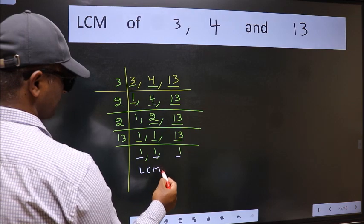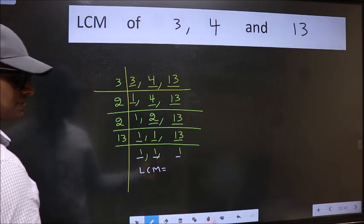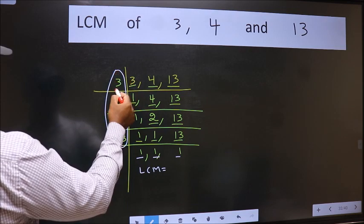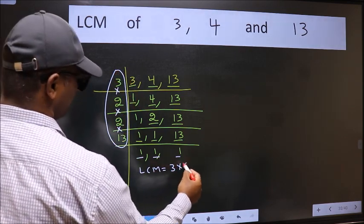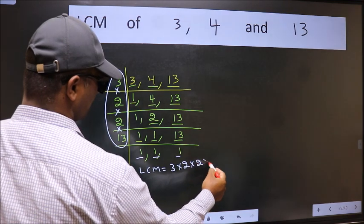So our LCM is, LCM is the product of these numbers. That is 3 into 2 into 2 into 2 into 13.